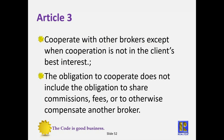Article 3: cooperate with other brokers except when cooperation is not in your client's best interest. The obligation to cooperate does not include an obligation to share commissions, fees, or otherwise compensate another broker — that obligation comes from the MLS. If you show a property that's not in the MLS, you get paid nothing unless you have a compensation agreement stating how much you're going to get paid. If the property is in the MLS, you get paid what's in the MLS. If it's not in the MLS, you need to lead with a compensation agreement before you present an offer.